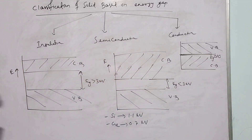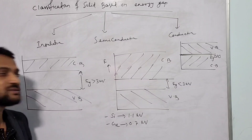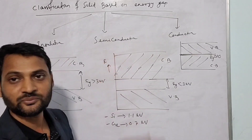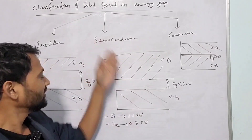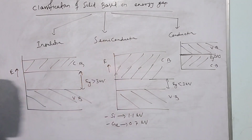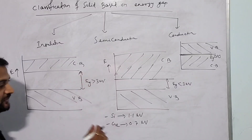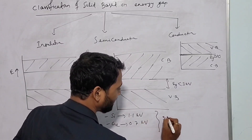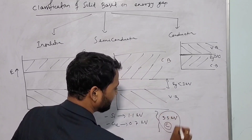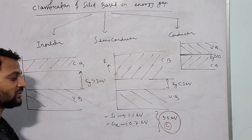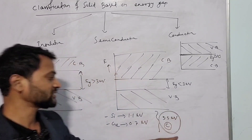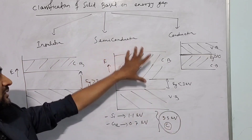One question you may ask: carbon is also a tetravalent atom from group 14 — why is it not a semiconductor? Because the energy gap of carbon is more than 5.5 electron volts, so it does not come under semiconductor. With this I am ending this lecture. Hope you guys understood what I explained today. Thank you so much for watching.